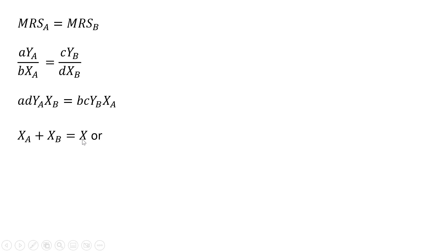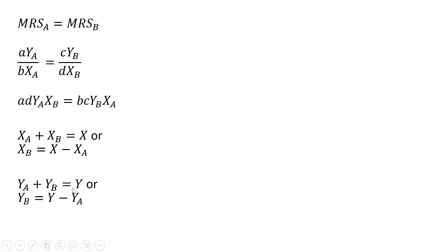The total endowment of good X can be written as X equals XA plus XB. Solving for XB gives X minus XA, and where we have XB I'll substitute in X minus XA. The total endowment of good Y looks similar; solving for YB we get Y minus YA, and I'll substitute that in where we have YB. Making those substitutions, we have this result.